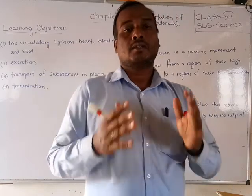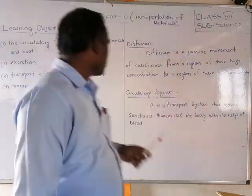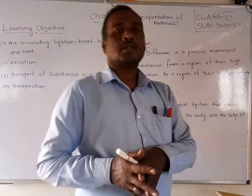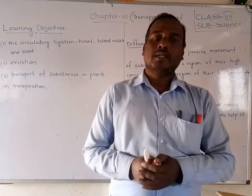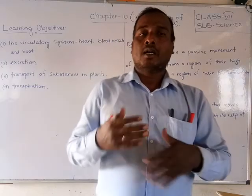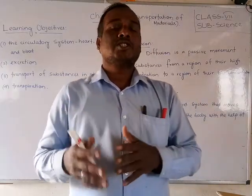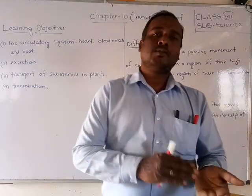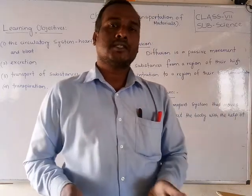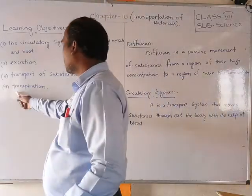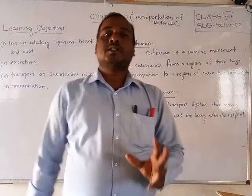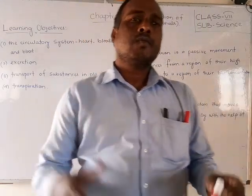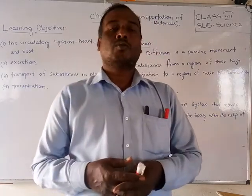Next, we will look at the transport of substances in plants. Just like in animals, plants also have transporting and circulatory systems for water and other substances, as well as excretion of waste. We will also discuss transpiration in plants in this chapter.